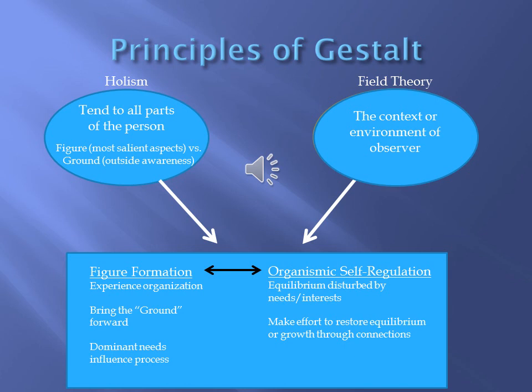Now let's talk about some of the key principles of Gestalt Theory. Fritz Perls really believed in needing to address all of the parts of a person — we can't break them into separate pieces. It's all of these parts put together that are always influencing one another, and we need to address them at once for change to occur. This is known as Holism. Some aspects of a person are much more salient, prevalent, or pressing — these could be comprised of our thoughts, feelings, behaviors, body awareness, memories, and even our dreams. These items, as long as they're more salient, are known as the figure.